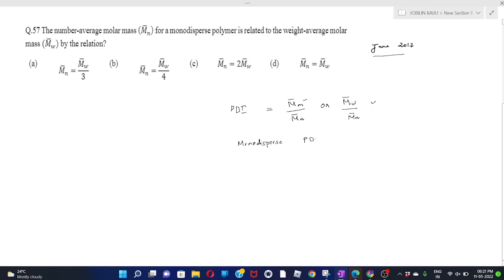For monodispersed, the polydispersity index value will be equal to 1. Therefore here I am going to write MW upon MN equal to 1. That comes out to be MW equal to MN. By that the correct option becomes option B. B is the correct answer.